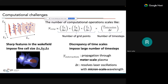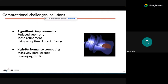There are several ways to overcome this computational cost: improve the algorithm with reduced geometry (e.g., cylindrical instead of Cartesian), mesh refinement focusing resolution on sharp features, or using an optimal Lorentz boosted frame where the computation is easier. This talk focuses instead on high performance computing — using massively parallel code and leveraging GPUs — which is Axel's part.